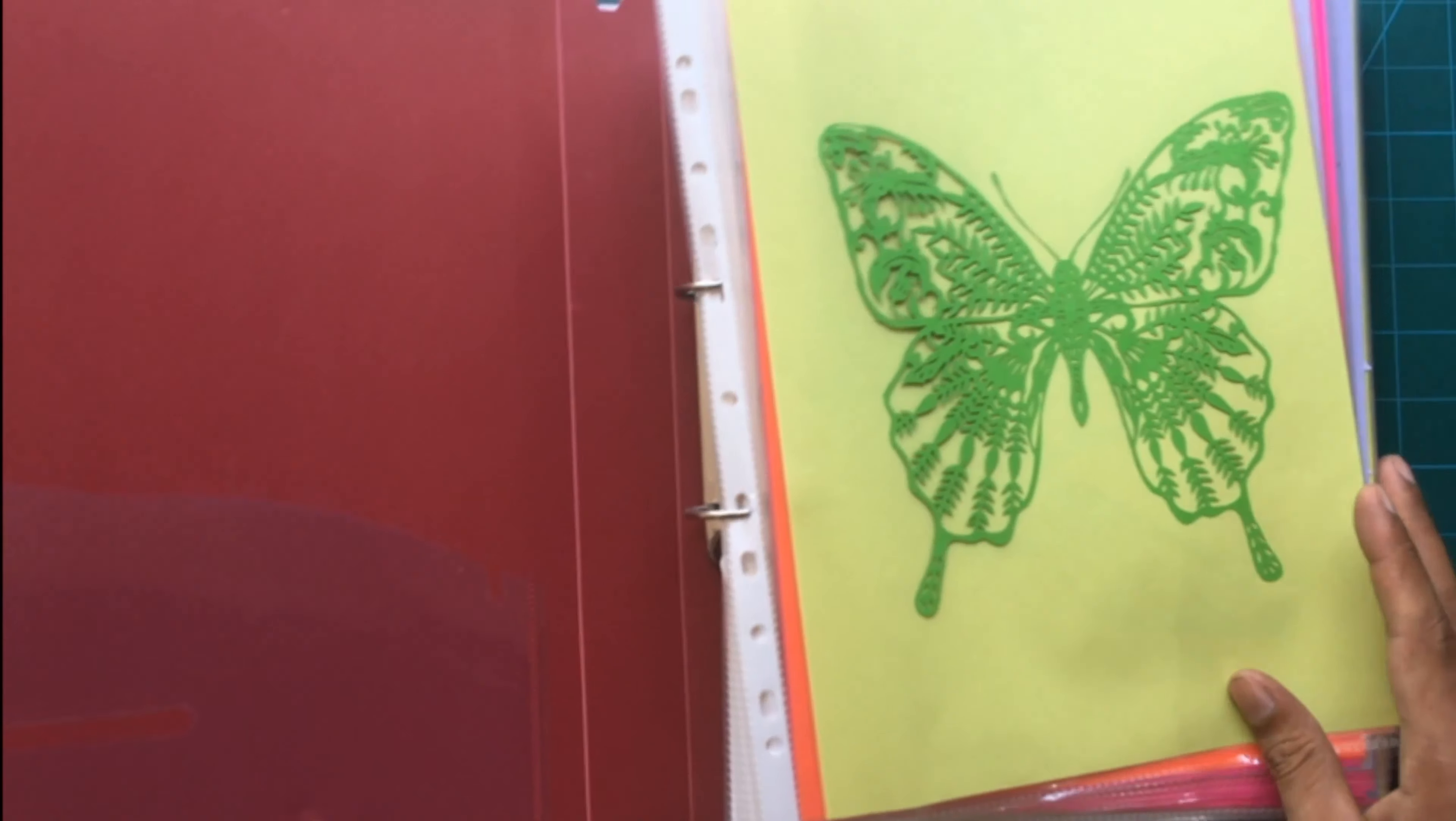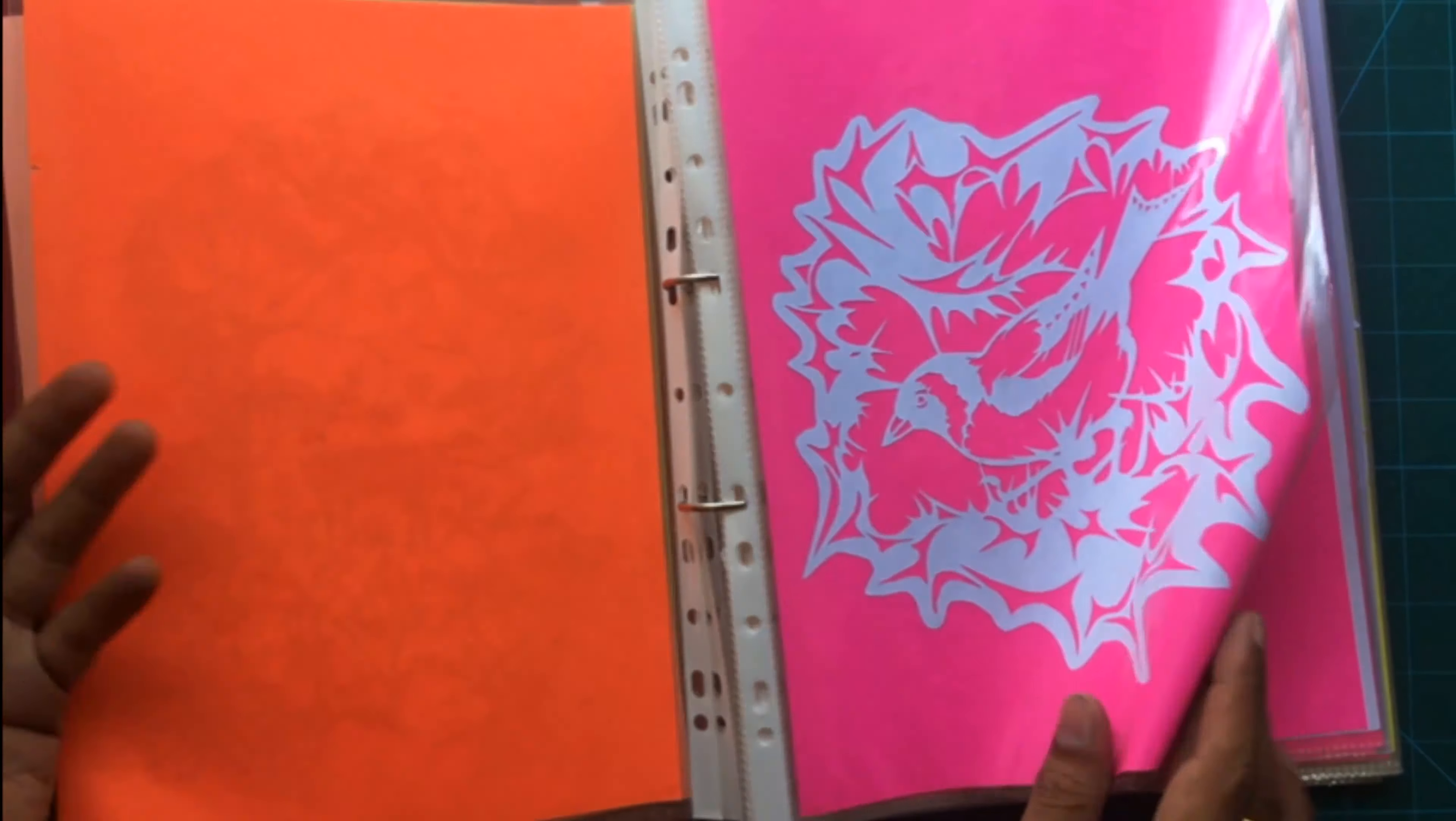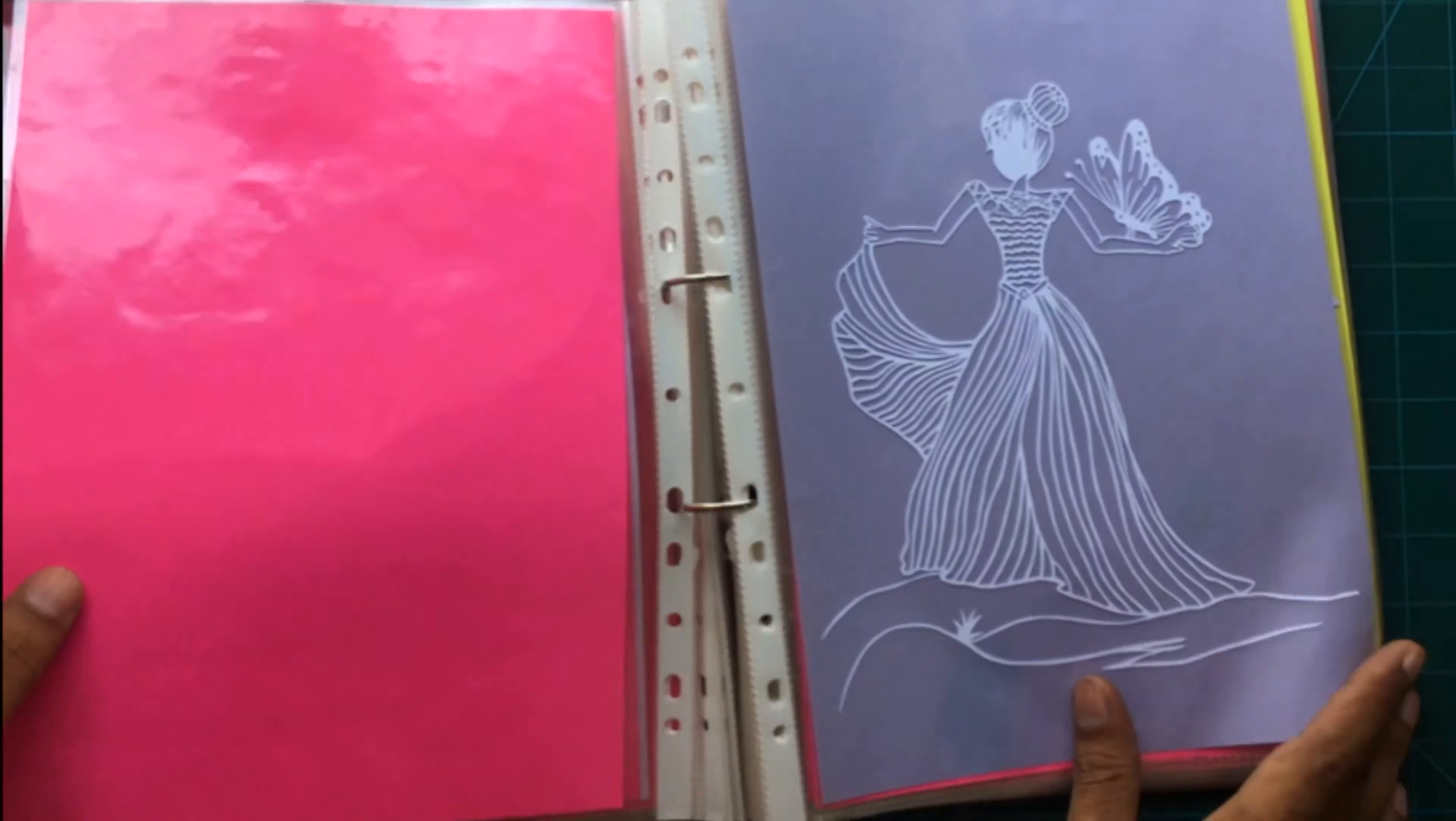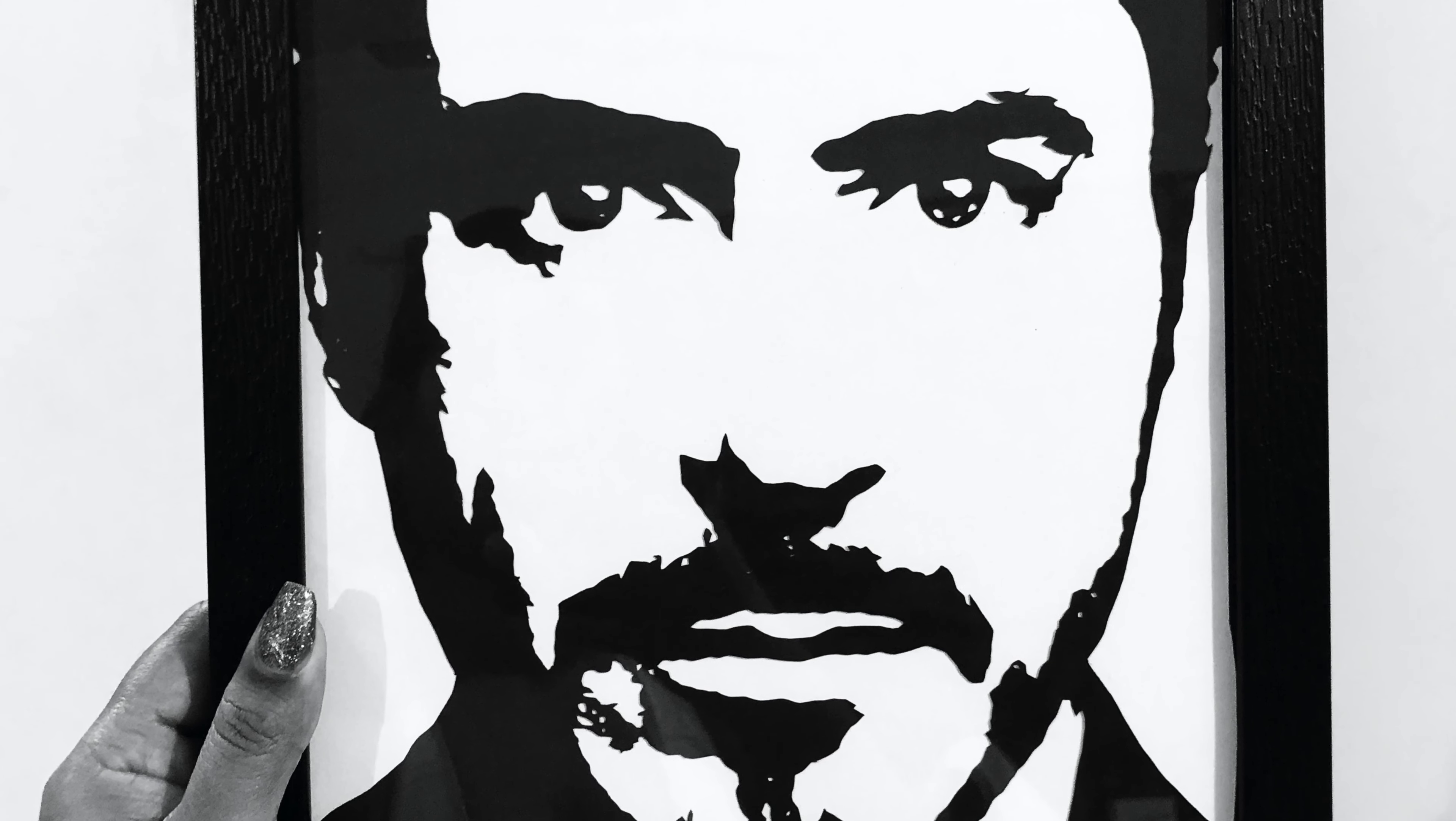The only thing left to discuss in this video is now how to store the designs that you have created by doing paper cutting. One of the ways is to use a document folder like one shown in the video, wherein you can put the paper cut that you have created on top of another paper and insert it into the leaves. The other way to store the paper cut is to frame it and then put the frames in storage.